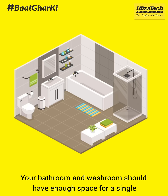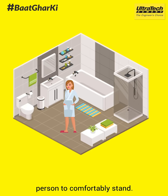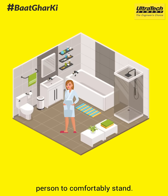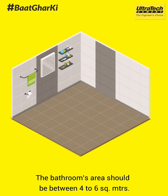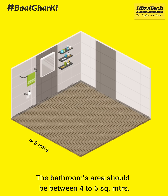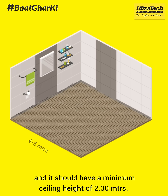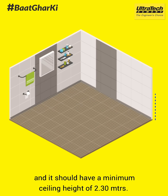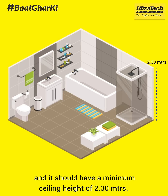Your bathroom and washroom should have enough space for a single person to comfortably stand in. The bathroom's area should be between 4 to 6 square metres and it should have a minimum ceiling height of 2.3 metres.